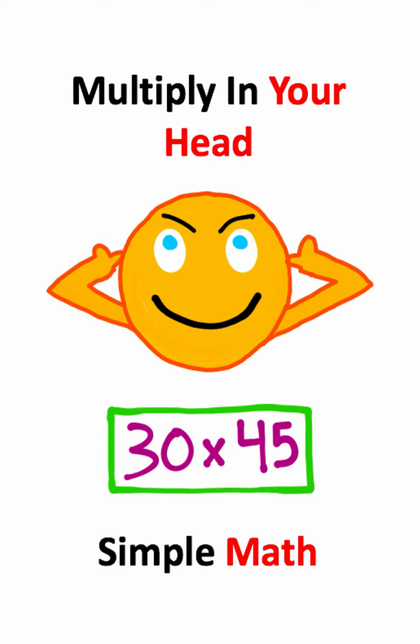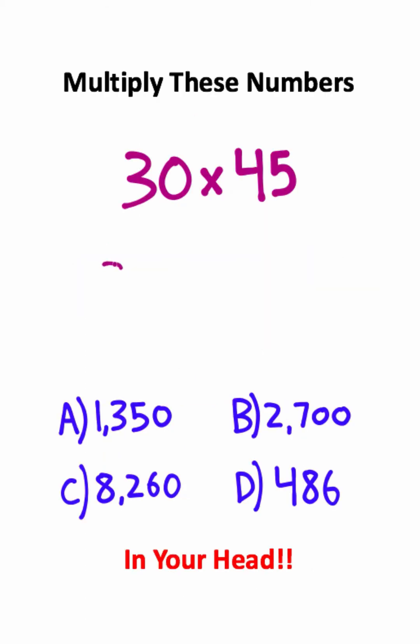This is the common strategy I see people use when multiplying numbers in their head. They'll take one number and keep it the same, and then they'll split the other number into two numbers that are easy to multiply.